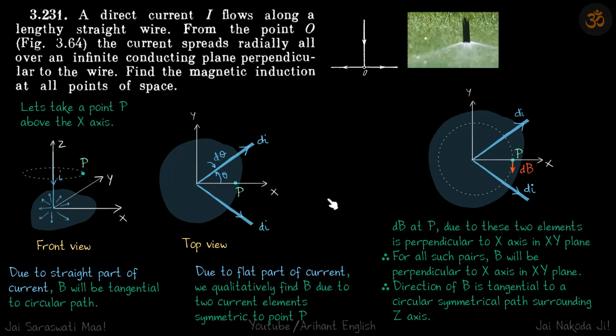If you use your right hand thumb rule, and if your imagination is very good, you'll be able to figure out that due to these two current elements, the field comes perpendicular to the X axis in the X-Y plane, towards down, basically negative Y direction. We'll visualize it and see it in detail in the next slide.